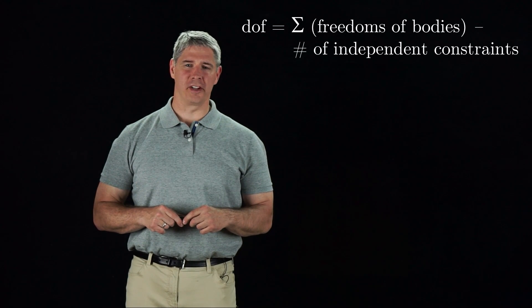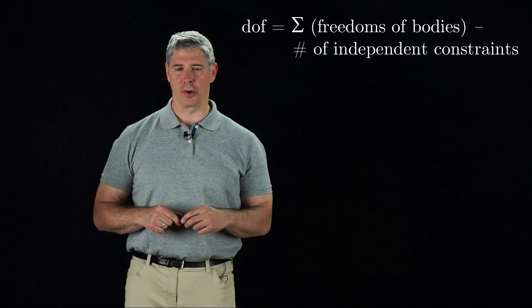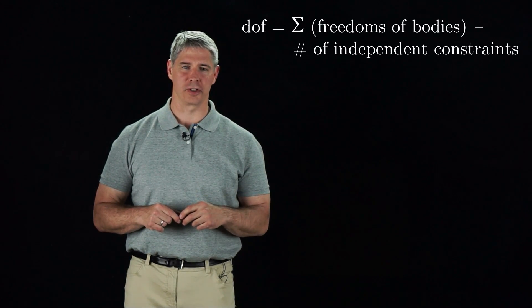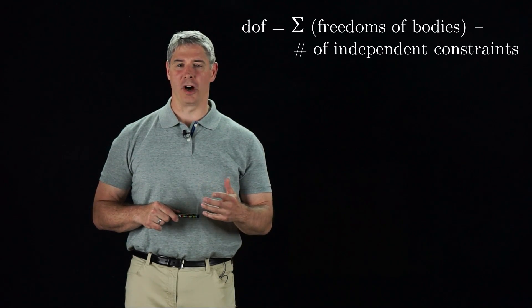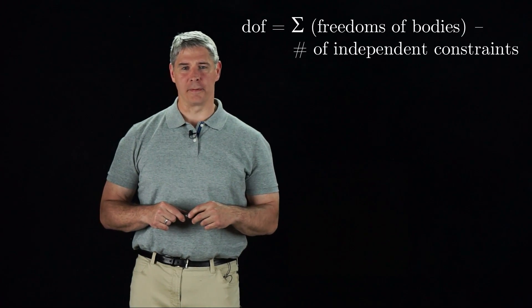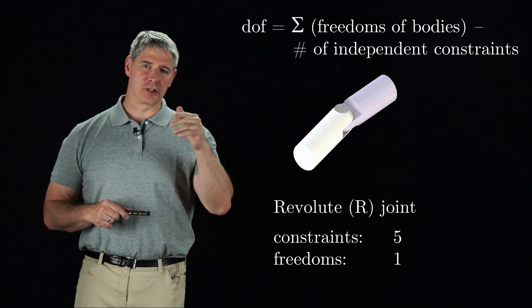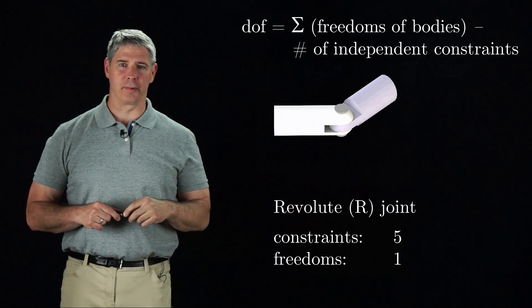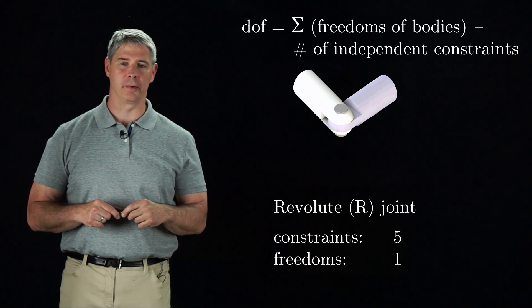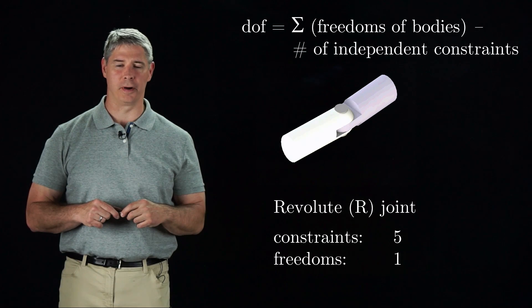In the previous video, we learned that the number of degrees of freedom of a robot is equal to the total number of freedoms of the rigid bodies minus the number of constraints on their motion. The constraints on motion often come from joints. The most common type of joint is the revolute joint. It places five constraints on the motion of a second spatial rigid body relative to the first, and therefore the second body has only one degree of freedom relative to the first body, given by the angle of the revolute joint.